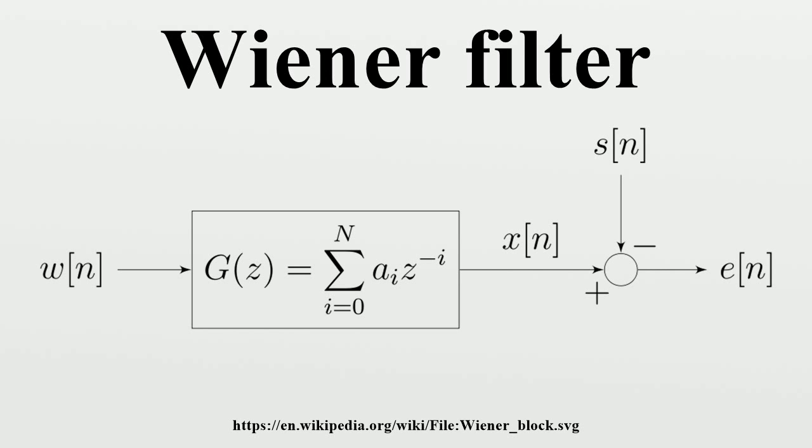Finite impulse response Wiener filter for discrete series: The causal finite impulse response Wiener filter, instead of using some given data matrix X and output vector Y, finds optimal tap weights by using the statistics of the input and output signals. It populates the input matrix X with estimates of the autocorrelation of the input signal and populates the output vector Y with estimates of the cross-correlation between the output and input signals.